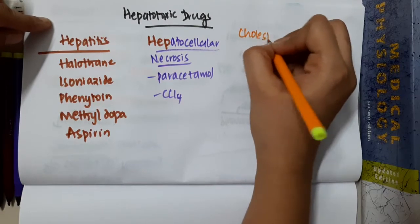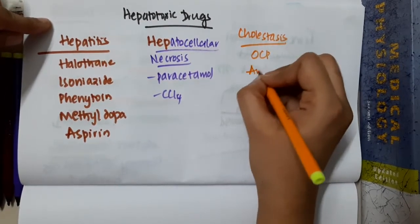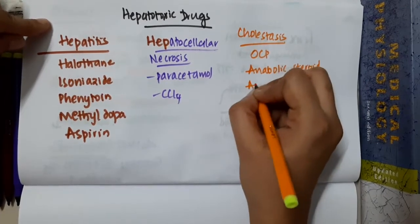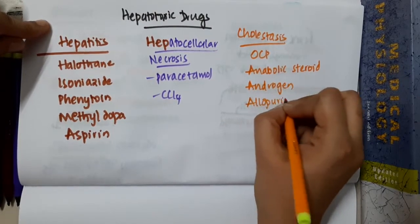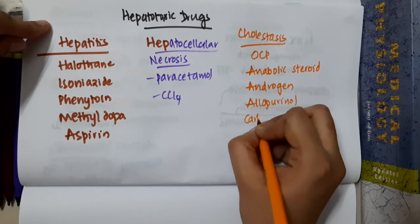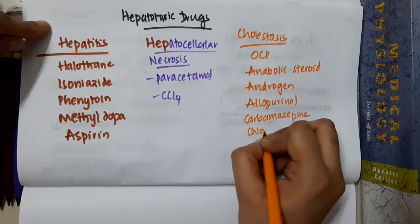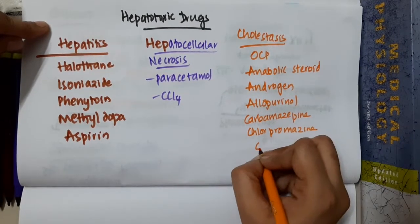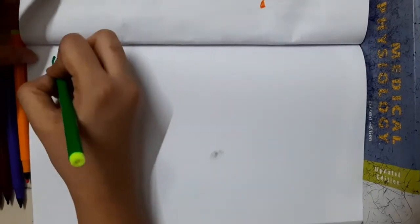What are the drugs which cause cholestasis? Cholestasis causing drugs are OCPs, anabolic steroids, androgens, allopurinol, carbamazepine, chlorpromazine, and salt. These are cholestatic hepatotoxic drugs.